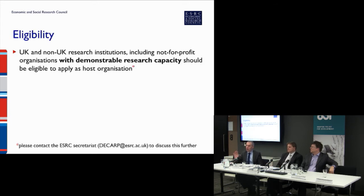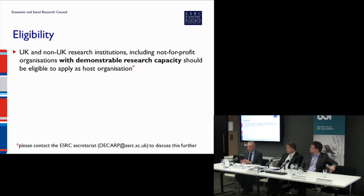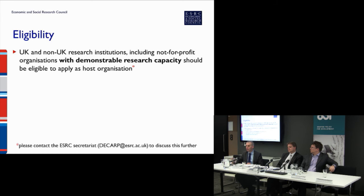In terms of eligibility, for this particular call both UK institutions and non-UK research institutions are eligible, including not-for-profit organizations. However, any organization applying as the principal applicant institution needs to have a demonstrable research capacity — this refers to the number of researchers you have access to, but also the ability to manage a grant and its financial administration. If you have any doubts about whether your institution might be eligible in terms of research capacity, please get in touch early using the email address at the bottom of the slide.